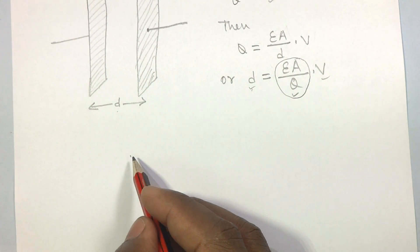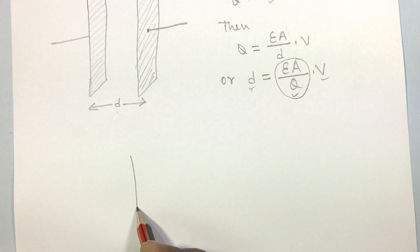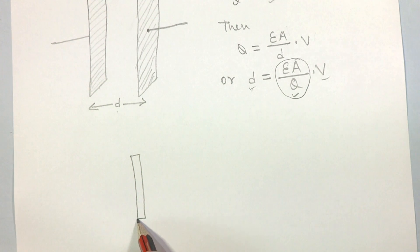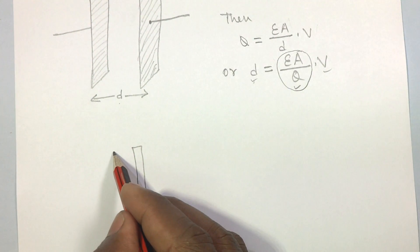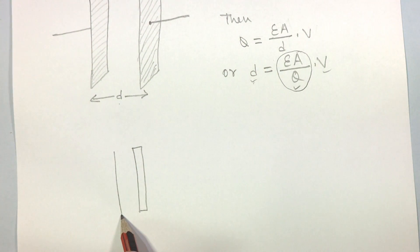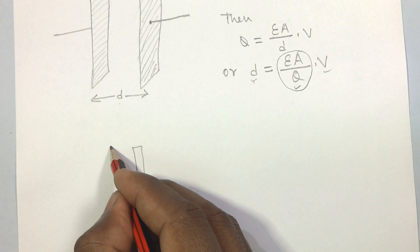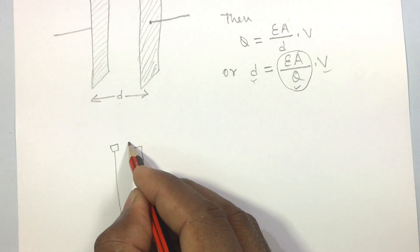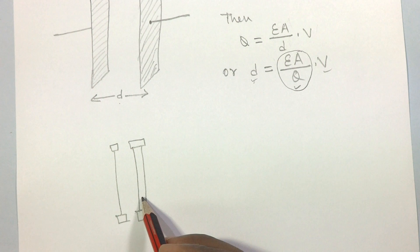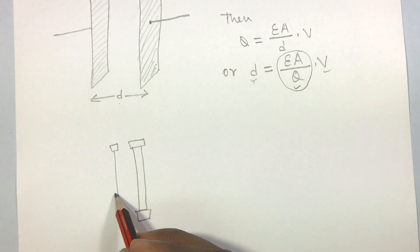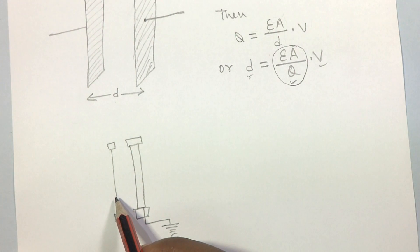This is the parallel plate capacitor. This is one plate of the capacitor, and this is the other plate. Both plates are fixed with insulator material. This plate is called the back plate and this is called the front plate. The front plate is made of very thin film and is able to vibrate due to sound pressure.